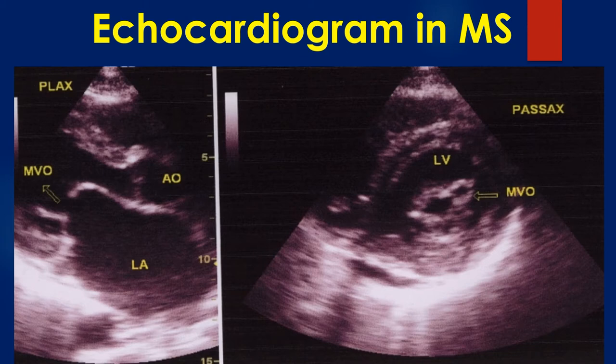Paradoxical movement of the posterior mitral leaflet is also visible. Normally, the posterior mitral leaflet moves posteriorly in diastole. Here there is a paradoxical anterior movement due to commissural fusion. The left atrium is dilated.